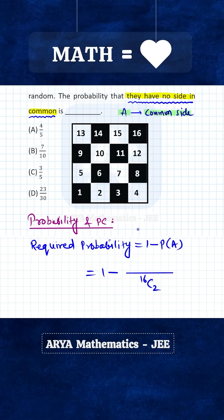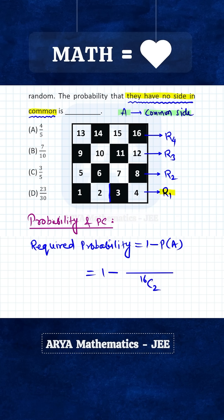Now we find in how many ways we can select 2 squares such that they have a side in common. There are 4 rows and 4 columns. Consider row 1 with 4 squares. If we select squares 1 and 2, we get a common side. Similarly, selecting squares 2 and 3, or squares 3 and 4, each gives a common side. So there are 3 different ways to select 2 squares in row R1 with a common side.